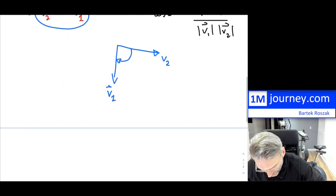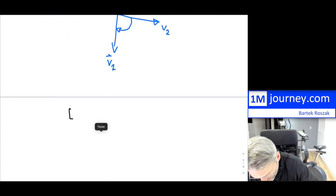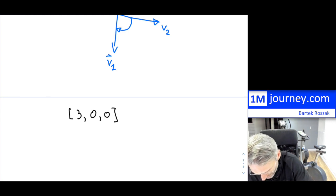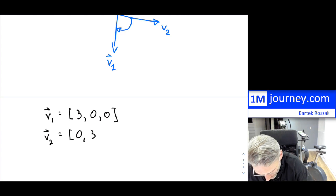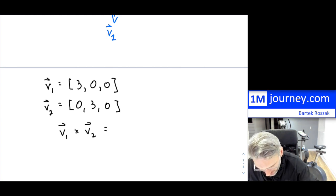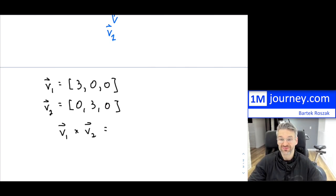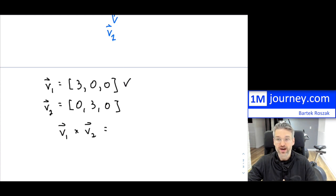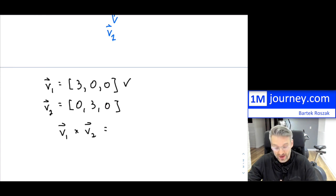My first vector is (3, 0, 0) — that's vector number 1. My vector number 2 is (0, 3, 0). To find the cross product, I need the magnitude of the first one. The magnitude is the square root of 3² + 0² + 0², which equals √9 = 3. So the magnitude of V1 is 3, and the magnitude of V2 is also 3.